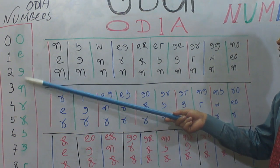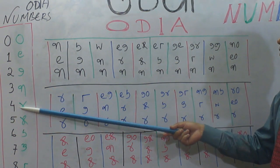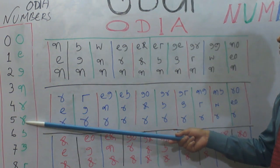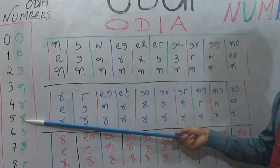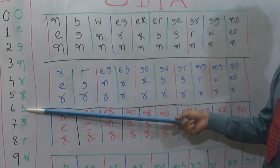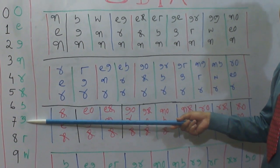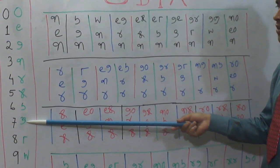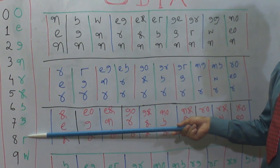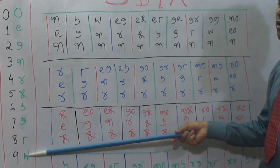Let's repeat the Odia numbers: two is 'dui', three is 'tini', four is 'chari', five is 'pancha', six is 'chha', seven is 'sata', eight is 'artha', nine is 'noa'.